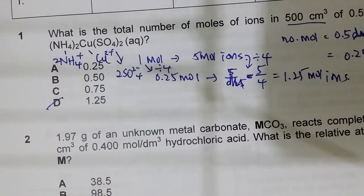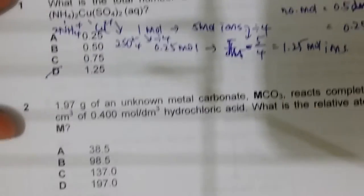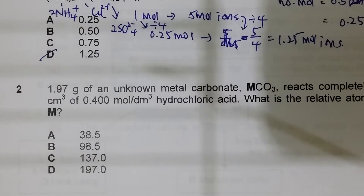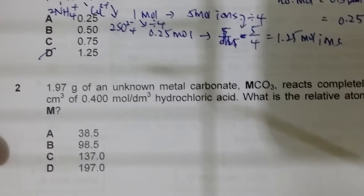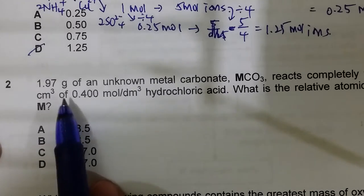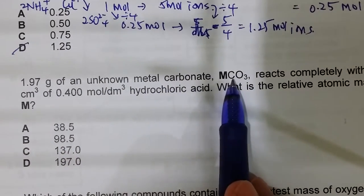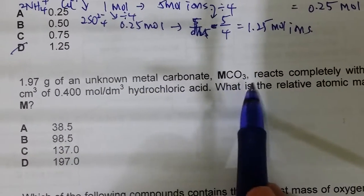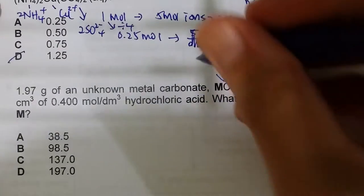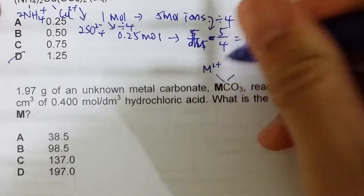So the answer to question one is D. For question two, you have 1.97 grams of an unknown metal carbonate MCO₃. From the formula, you can deduce that M has a charge of 2+ because carbonate is CO₃²⁻.